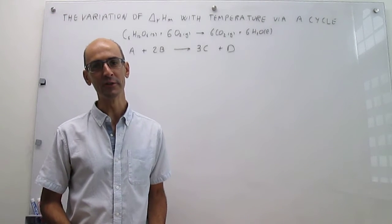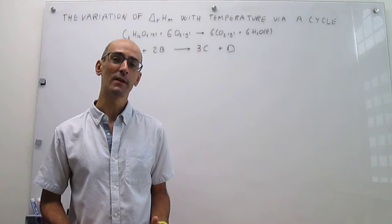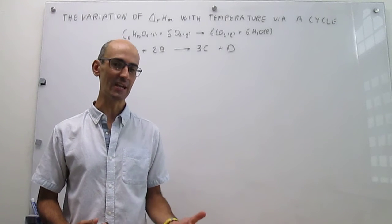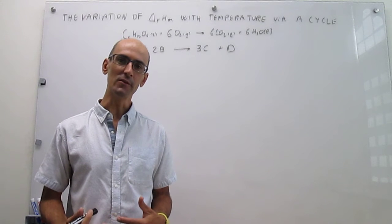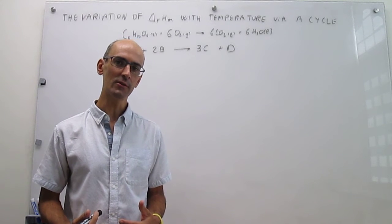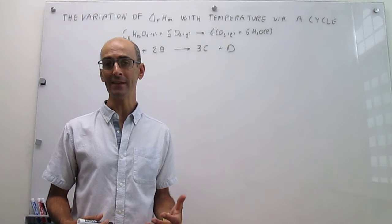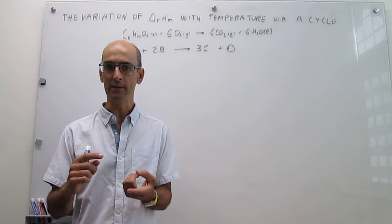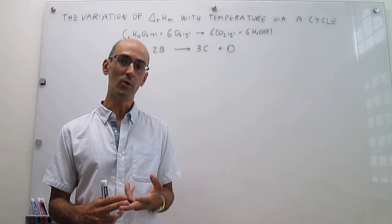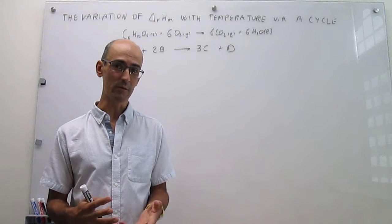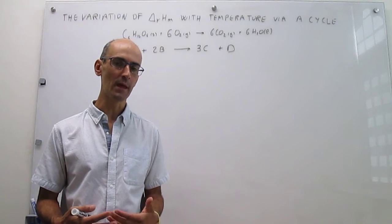In this video, we are going to learn how to determine how the enthalpy of a reaction changes with temperature. In the last few videos, we have learned how to calculate the enthalpy of a reaction using either of three methods: the mean-bond enthalpy, Hess's law, or the best method, which is the method of the enthalpy of formation.